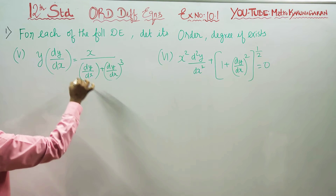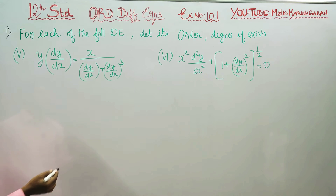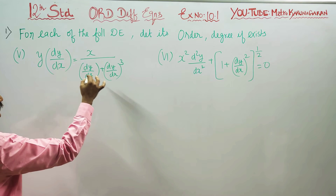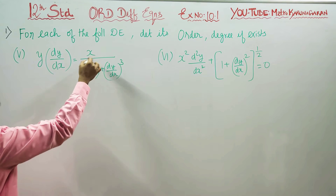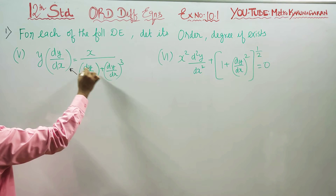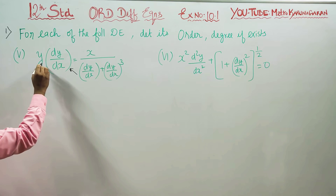First of all, in the denominator it is not a polynomial. Polynomials in d's — that is a differential. In the denominator it is a polynomial. It is cross-multiplied.